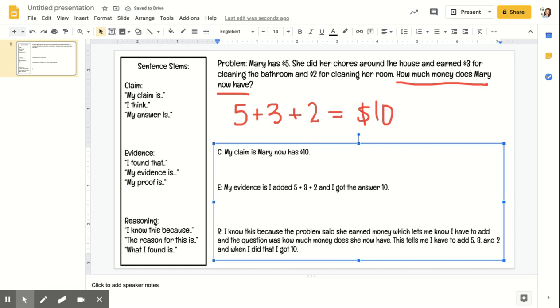So just a reminder: our claim is our answer, our evidence is how we got our answer, and our reasoning is our answer and our evidence. So why did we decide to do what we did for this problem? If you have any more questions about claim, evidence, or reasoning, or CER, feel free to reach out to us so we can give you more help.